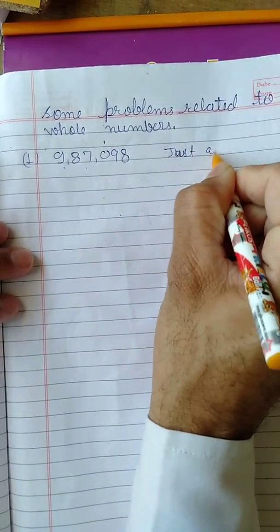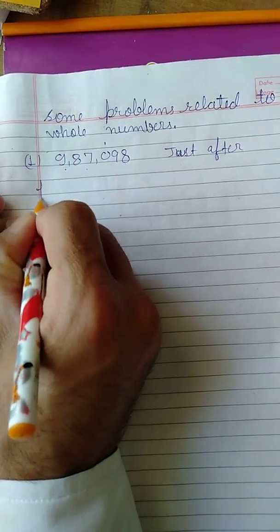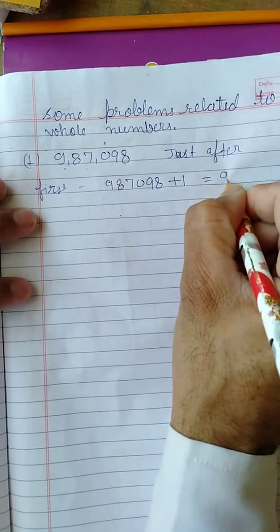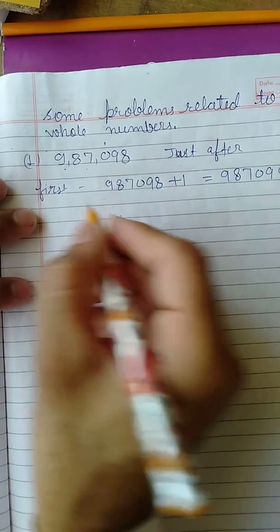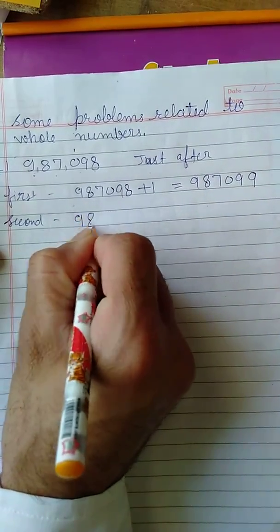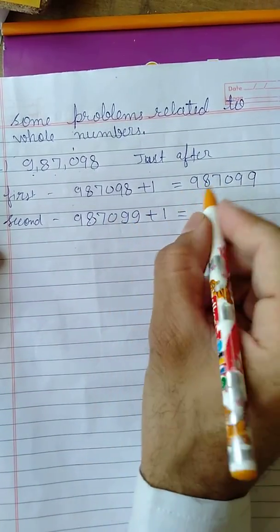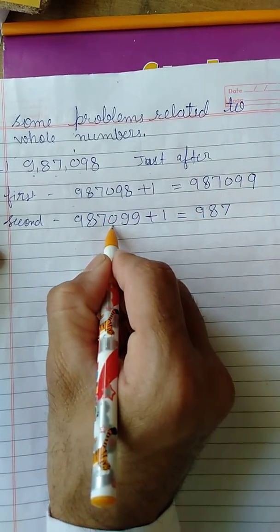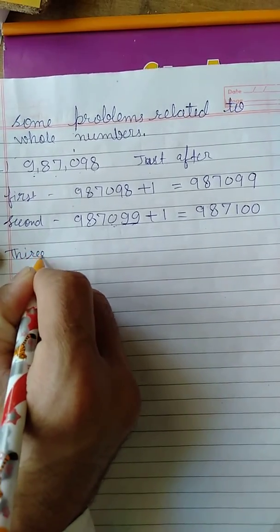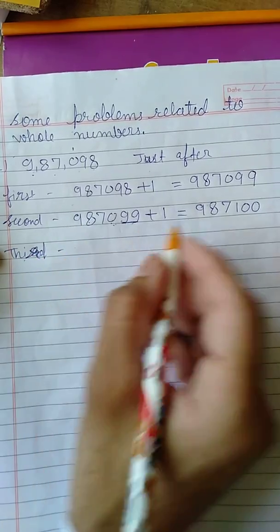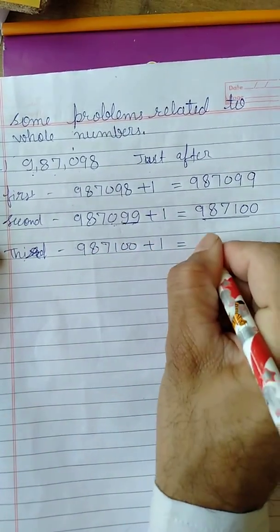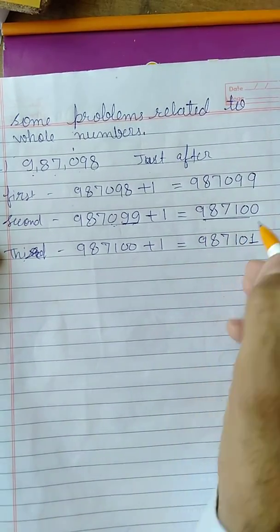Successor means we add one. So the first successor will be 987098 + 1 = 987099. The second will be the successor of the first: 987099 + 1 = 987100. The third number will be the successor of the previous one: 987100 + 1 = 987101. These three are natural numbers.